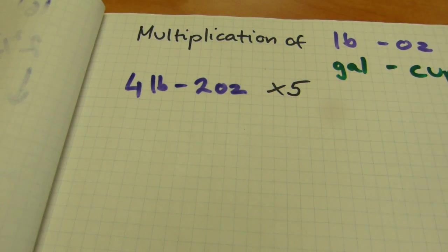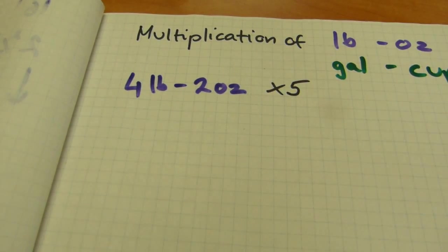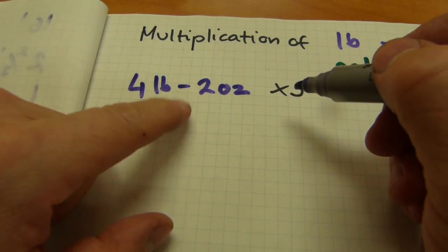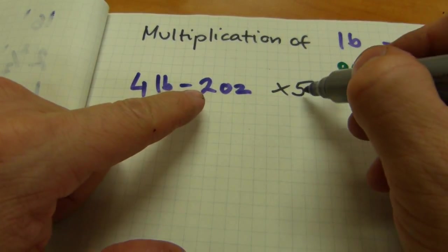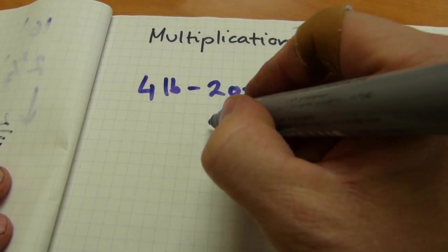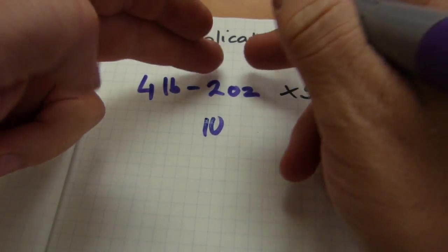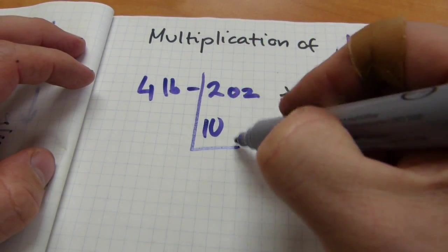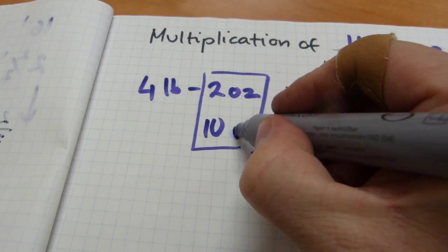And then I rewrite the same thing in gallons and cups. So what you do is you take the multiplier, the five, and you multiply it with the ounces first. Five by two, ten. You just write it down here. This is your ounces column, ten ounces.